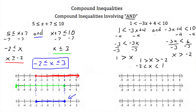Now we'll graph this. For x has to be less than 1, we go to 1 on the number line and put an open circle, because this is a less than sign and therefore 1 is not a valid solution. We shade everything to the left of 1. Our next solution is x has to be greater than negative 2. We go to negative 2 on the number line, put an open circle because it's greater than, not greater than or equal to, and shade everything to the right of negative 2.